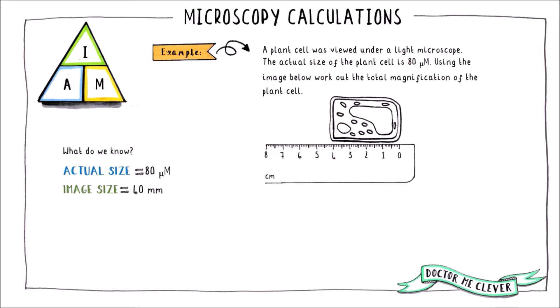So using our ruler we can measure the size of the image and we can see that it is 40 millimeters in length. The next step is to make sure that the units of the actual size and the image size are the same. And we can see that one is in micrometers and one is in millimeters at the moment so we need to convert one of them.